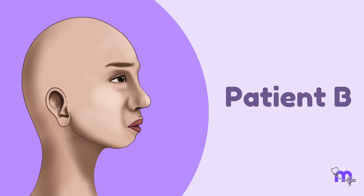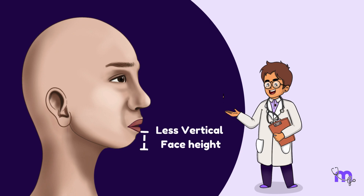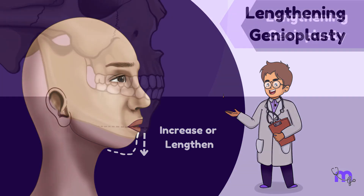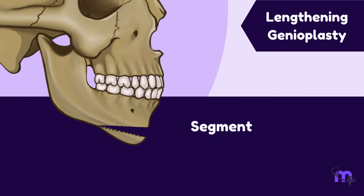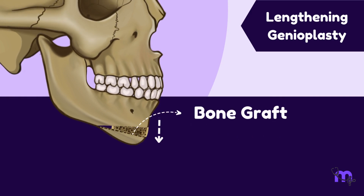Now let us take a look at patient B. Since her vertical facial height is quite less, we would like to increase or lengthen it. This can be done with lengthening genioplasty. Following a horizontal osteotomy, the segmented bone is pushed downward and bone grafting is performed to augment the height.